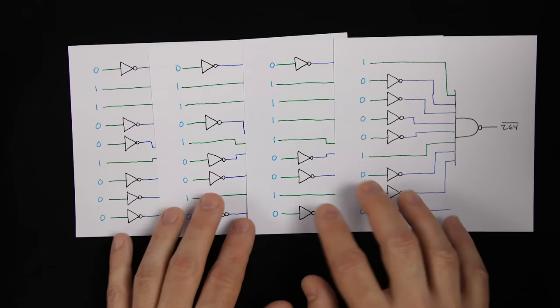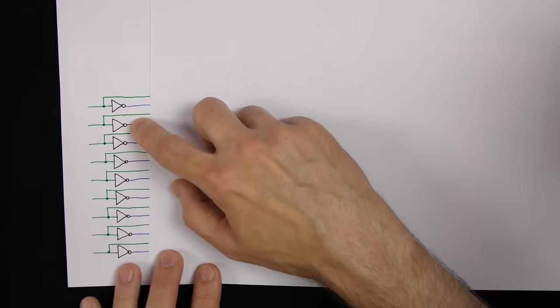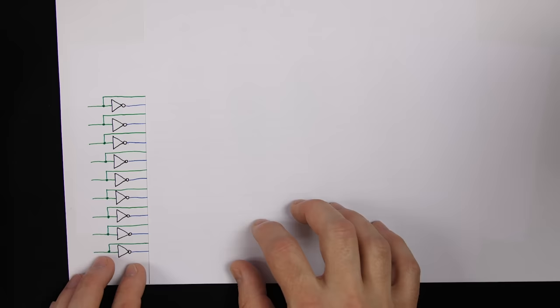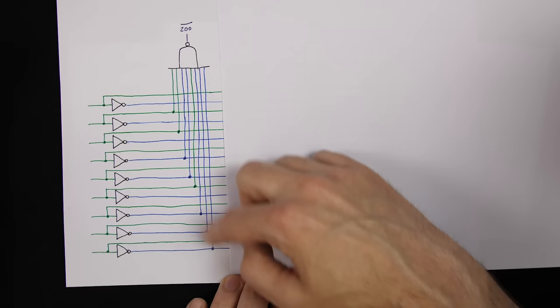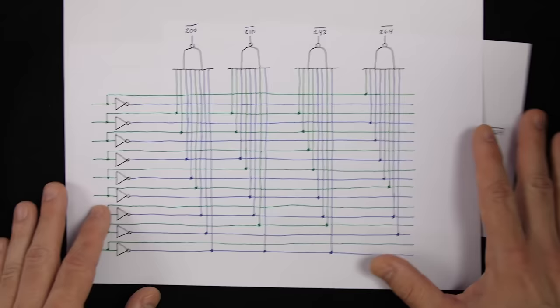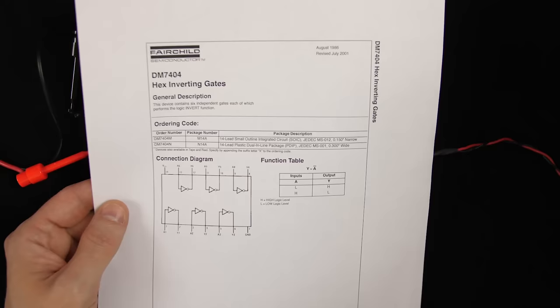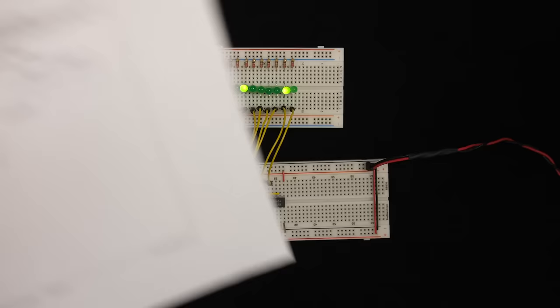Obviously we've got a lot of inverters, but many are duplicates. We just need one per bit: nine bits come in, we invert all of them, giving us both the inverted and non-inverted version of each bit. Then when decoding each number we're interested in, we pick the inverted or non-inverted copy as needed. To invert each signal I'm going to use the 74LS04, which has six inverters. We need nine, so I'll use two of these chips.